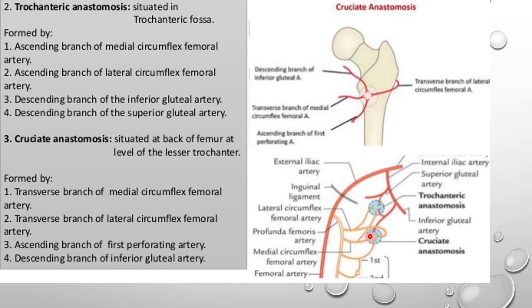The cruciate anastomosis is situated at the back of the femur at the level of the lesser trochanter, whereas the trochanteric anastomosis was at the level of the greater trochanter. The cruciate anastomosis is formed by the transverse branches of the medial circumflex femoral and lateral circumflex femoral arteries, plus the descending branch of the inferior gluteal artery — but not the superior gluteal artery.